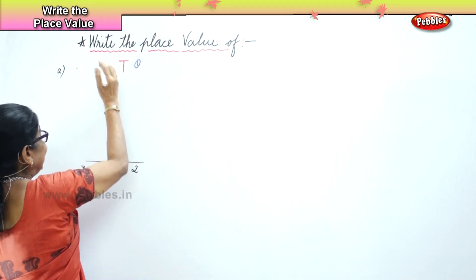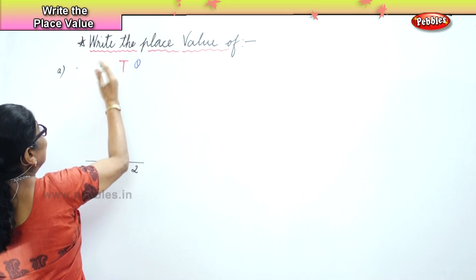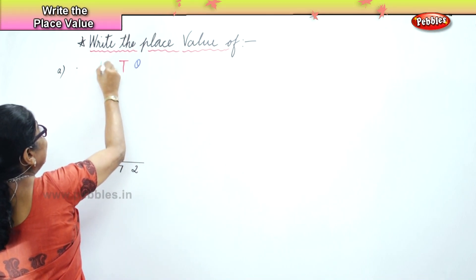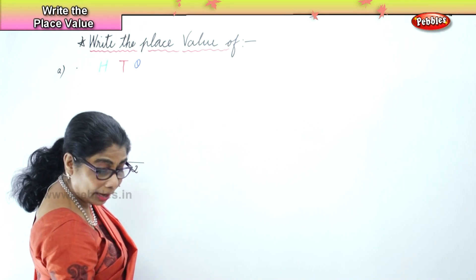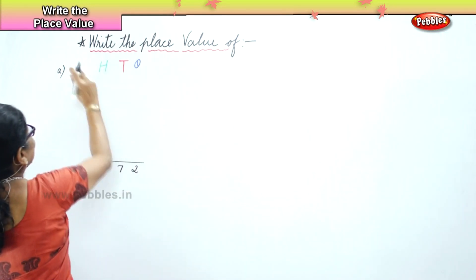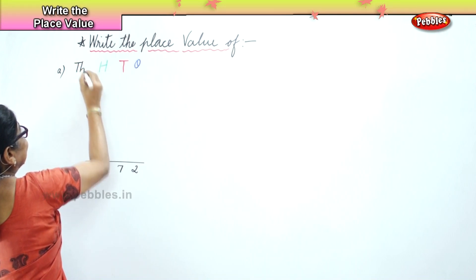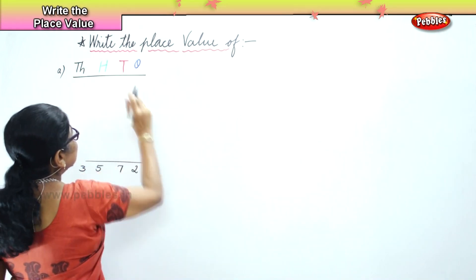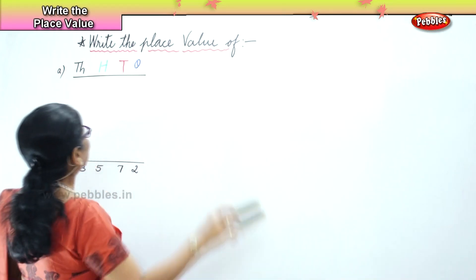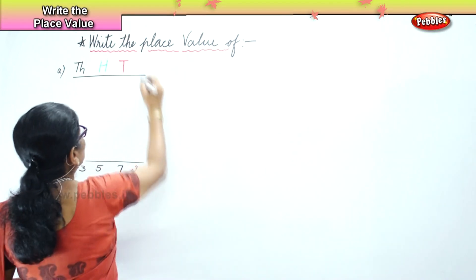Next you have the green, that is the hundreds place. So you will know those are hundreds. And then finally, you have the black — that is the thousands. So you write TH. Now first, when you write, you must put down this to help you through.